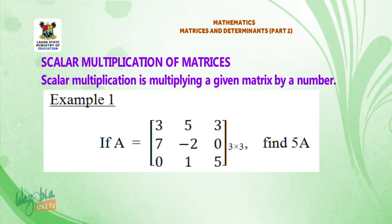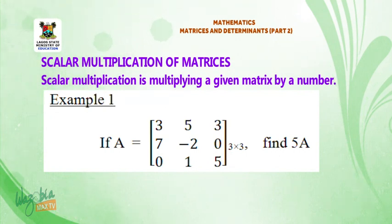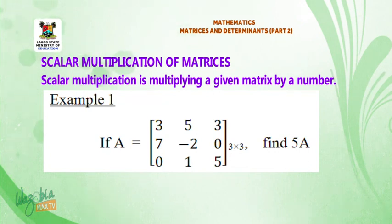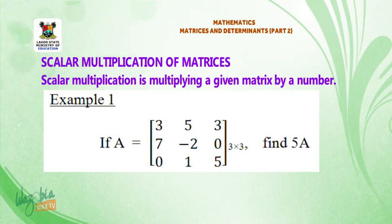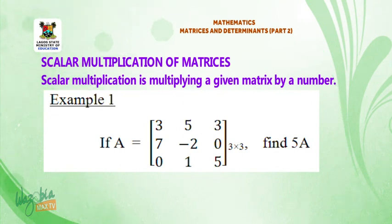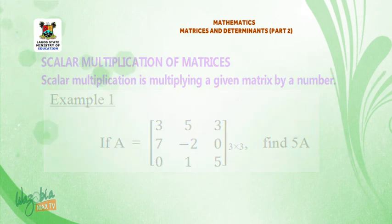Example 1. If A is equal to the matrix: 3, 5, 3, 7, minus 2, 0, 0, 1, 5 — find 5A.